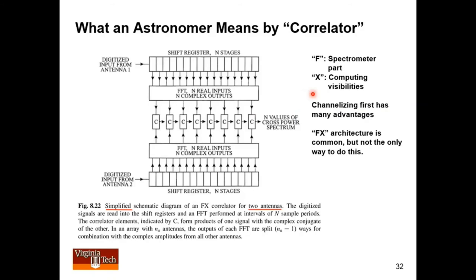So most modern correlators follow this architecture, where you have a spectrometer part, that's the F part of FX. Then you have a correlation part, which is the X part of FX. So an FX spectrometer is something which looks at each baseline, breaks it up into small frequency chunks, and then cross-correlates the frequency chunks to produce a dynamic spectrum for one baseline. And then you collect all those baselines. So I say this is simplified, because this is all the plumbing associated with just one baseline.